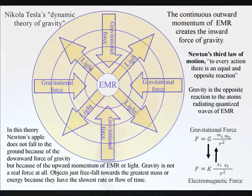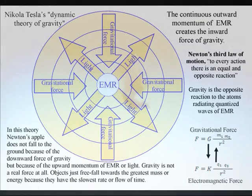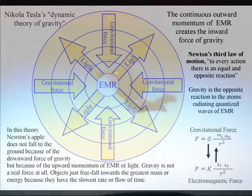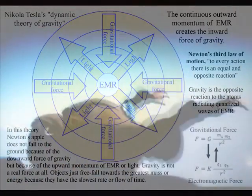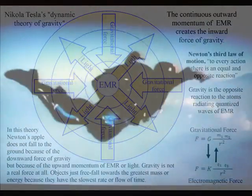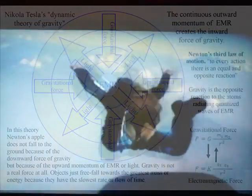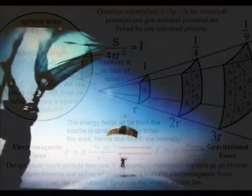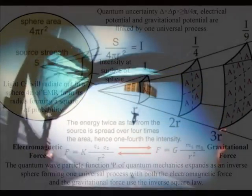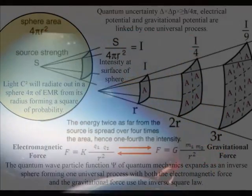In this theory, Newton's apple does not fall to the ground because of the downward force of gravity, but because of the upward momentum of electromagnetic radiation or light. Gravity is not a real force at all. It is a secondary force to the electromagnetic force. Objects just freefall towards the greatest energy because it has the slowest rate of time, or the greatest time dilation.